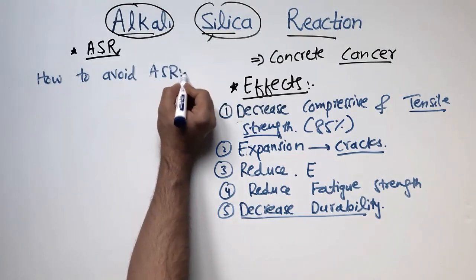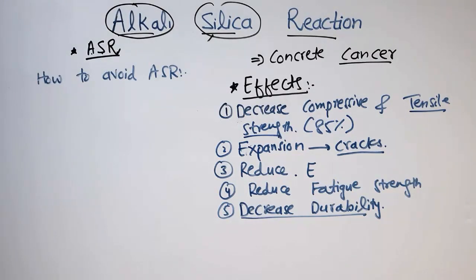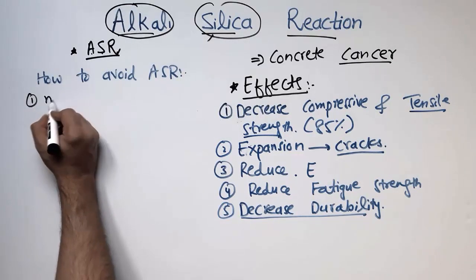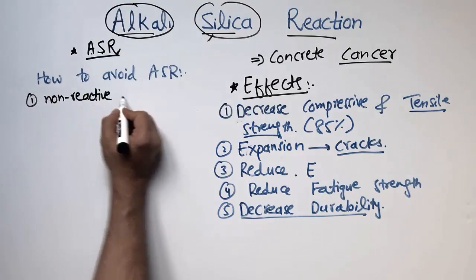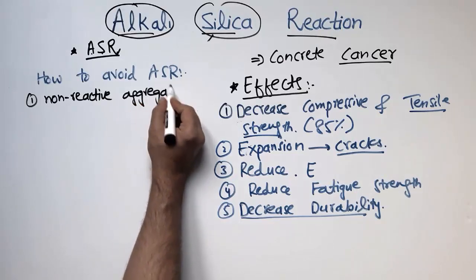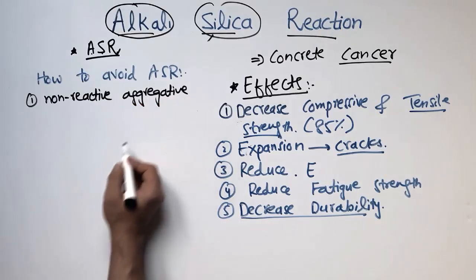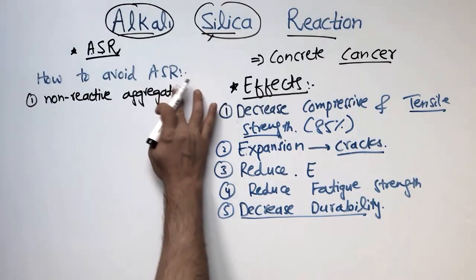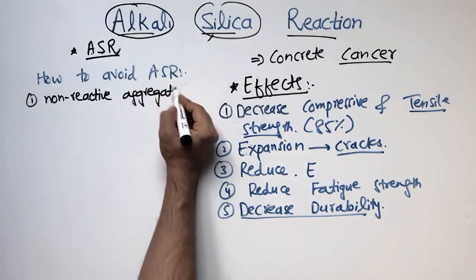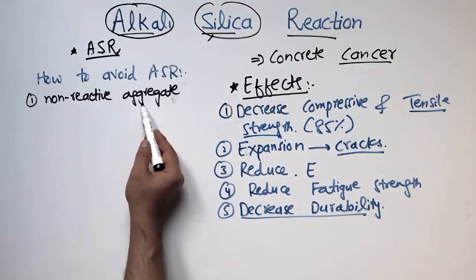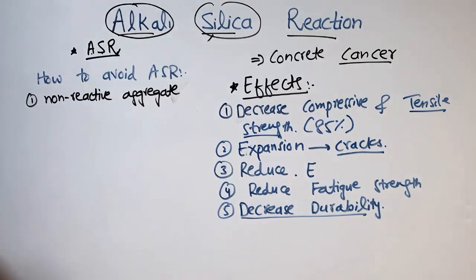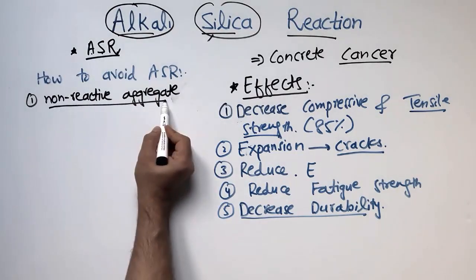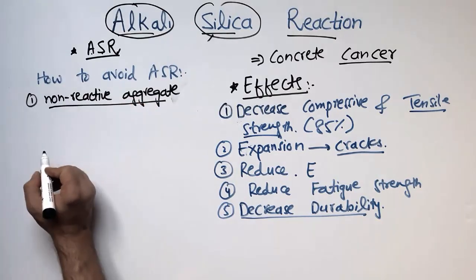There are some methods to reduce the alkali silica reaction. The first is to use non-reactive aggregates, which should be tested in the laboratory. Using non-reactive aggregates can reduce ASR by a huge amount, because reactive aggregates are the ones that react with the alkali content in the cement to make this reaction possible.